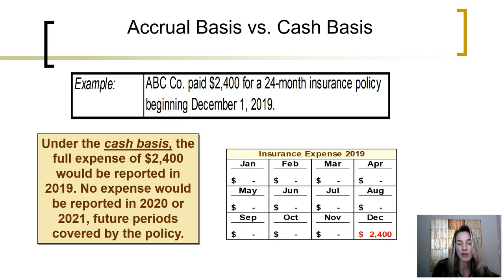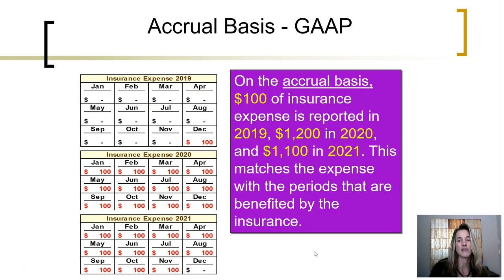Both of those periods are covered by this policy, so some of that expense should have been recorded in 2021, but all of the expense was recorded in 2019. Following the accrual basis, $100 of insurance expense is recorded and reported in 2019, $1,200 of insurance expense is recorded and reported in 2020, and $1,100 of insurance expense is recorded and reported in 2021.